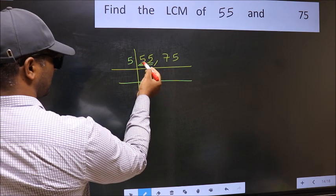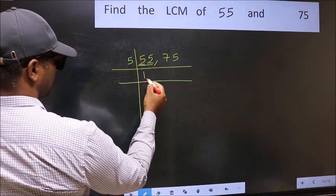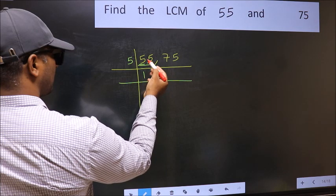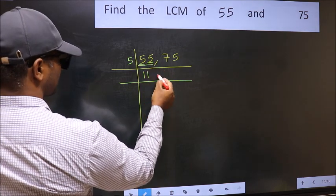First number 5, when do we get 5 in 5 table? 5 ones 5. The other number 5, when do we get 5 in 5 table? 5 ones 5.